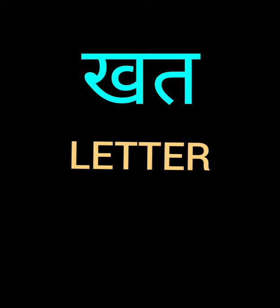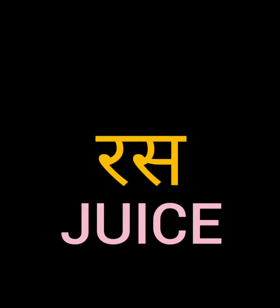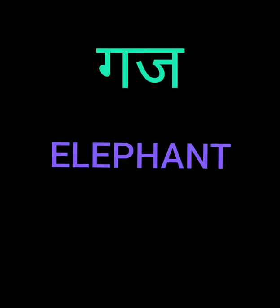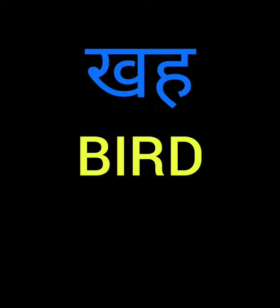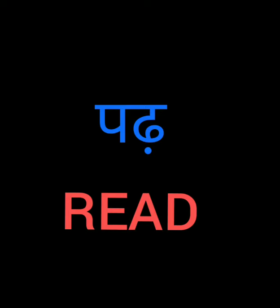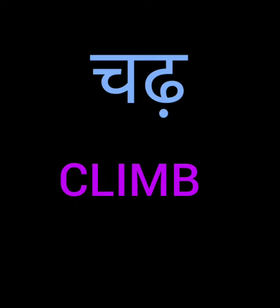Kath — Letter. Ras — Juice. Gaj — Elephant. Bas. Kkah — Board. Pad — Read. Chad — Climb.